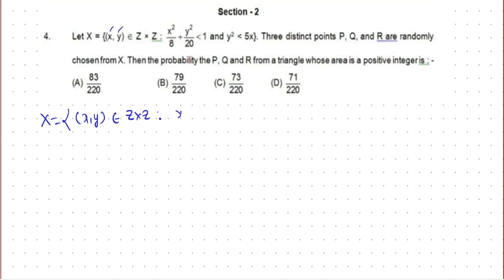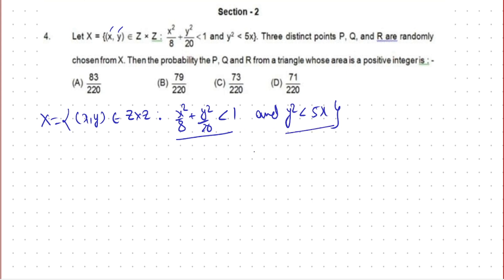The set is defined such that x²/8 + y²/20 is less than 1, and y² is less than 5x. The first inequality is the equation of an ellipse, and the second is the equation of a parabola.